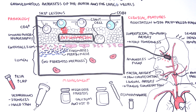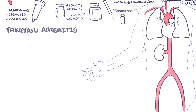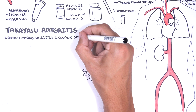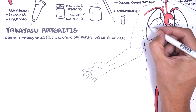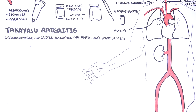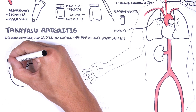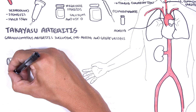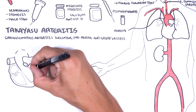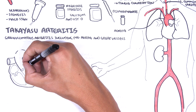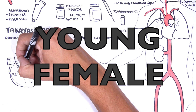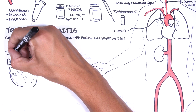The next large vessel vasculitis is Takayasu arteritis, also known as pulseless disease. It is a granulomatous arteritis that predominantly affects the aorta and the great vessels. It is named after the Japanese professor Mikito Takayasu, who first described the findings of the disease in a young population. Unlike giant cell arteritis, which typically affects elderly women, Takayasu arteritis is more common in young women and is highly prevalent in the Asian population.